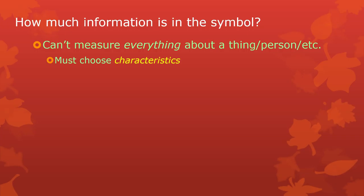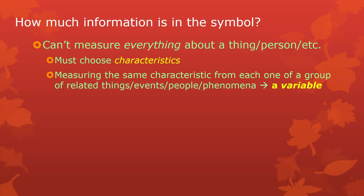So we choose — every time we get a group of things, events, phenomena, or whatever together to observe, we have to choose a characteristic, or more than one characteristic, to observe about those things. And when we measure one characteristic from a whole bunch of related things, people, or events, all those measurements that we collect together, we call them a variable.